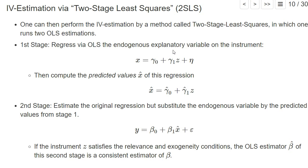In the first stage, we regress the endogenous explanatory variable on the instrument — so we run a regression of X on Z — and then we compute the predicted values x-hat from this regression. We take the OLS estimator: beta-hat-zero plus beta-hat-one times Z, setting the residual to zero, giving us the predicted value from the first stage regression.